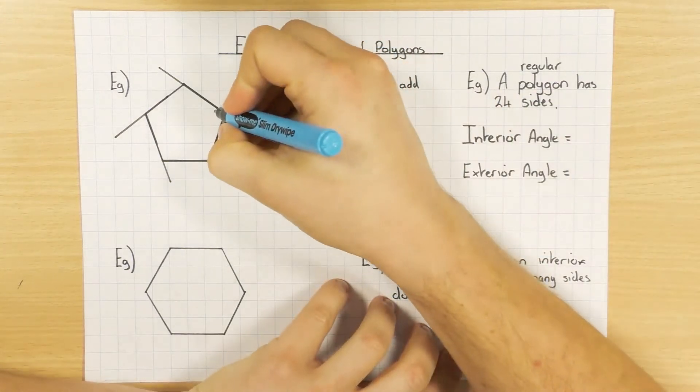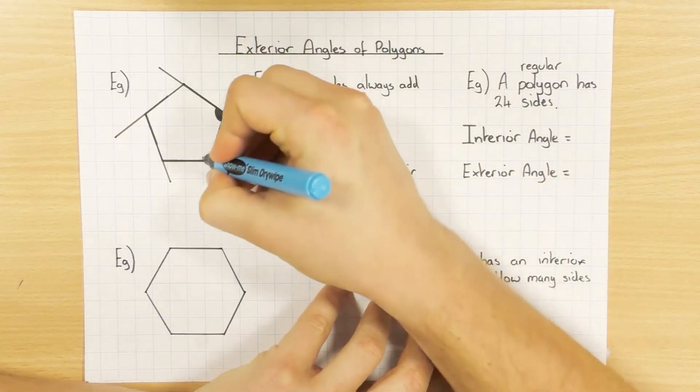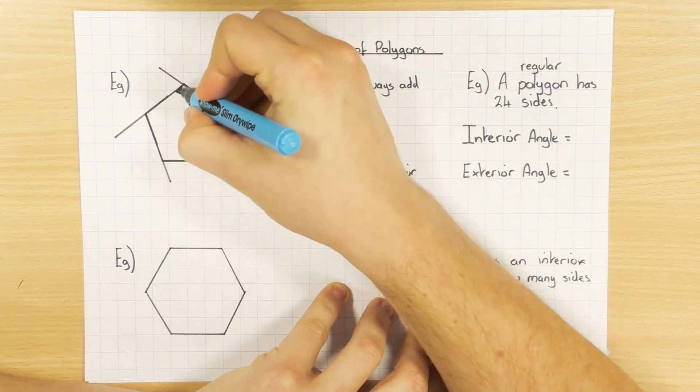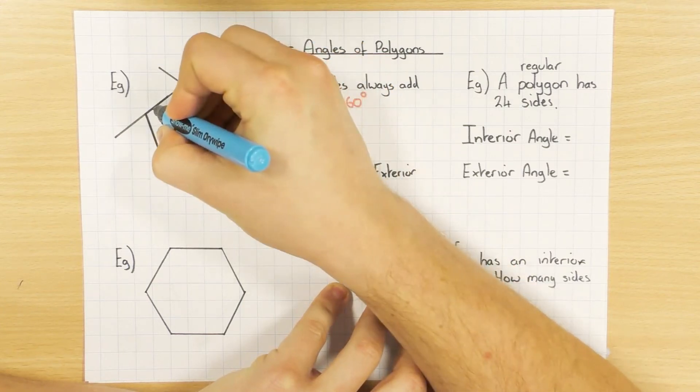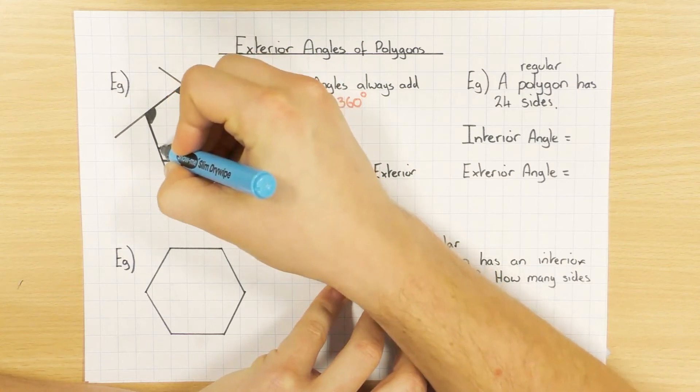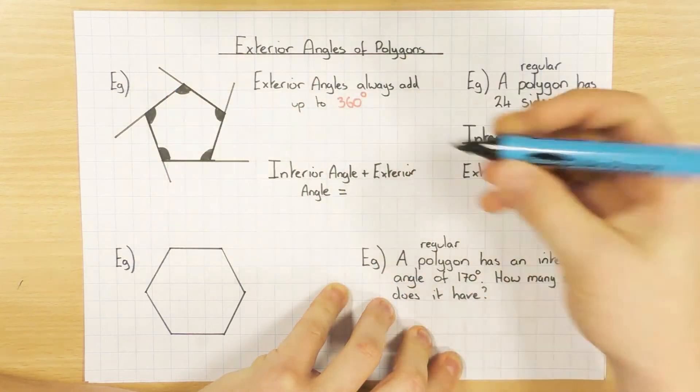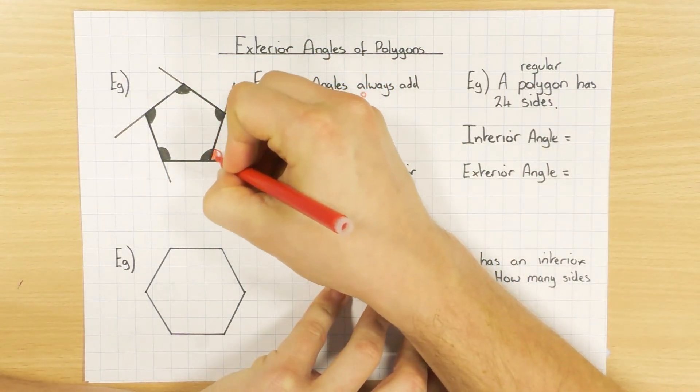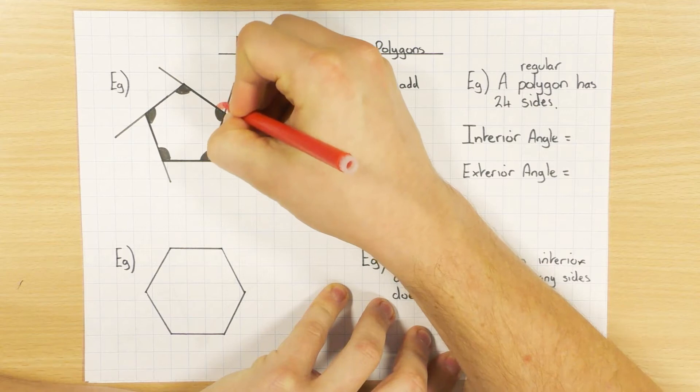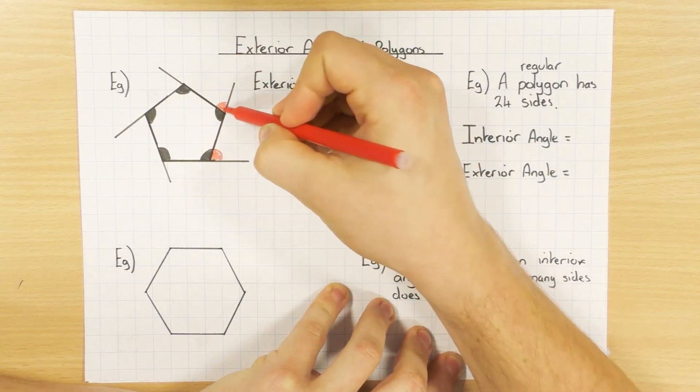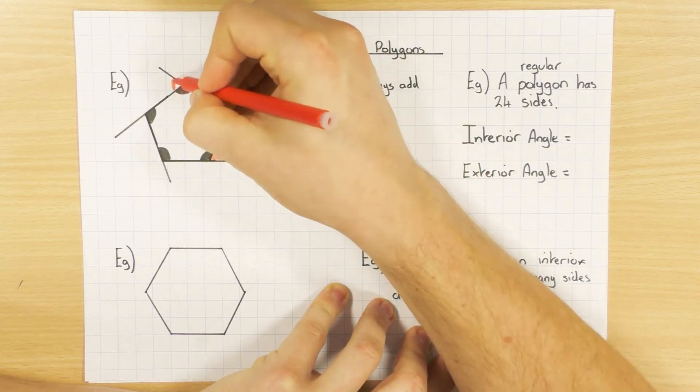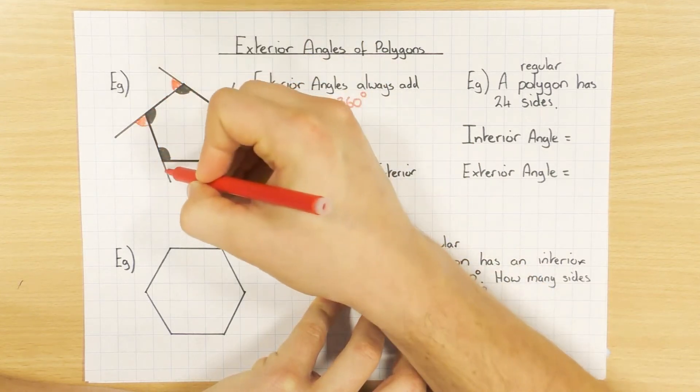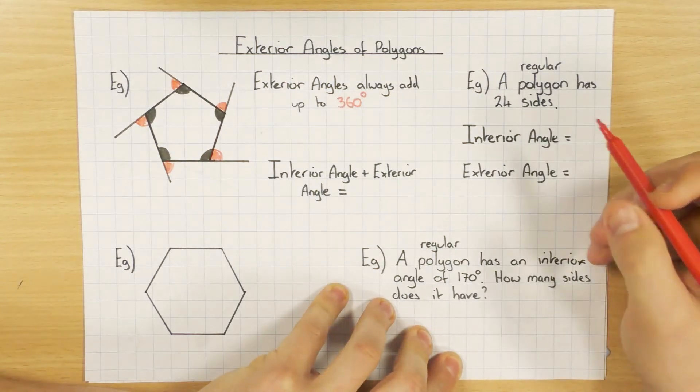I've just extended each side slightly. Now, the interior is obviously going to be the angles inside. So I'll just shade those in to show you. These are all going to be inside, the interior angles. We're going to have a look at the exterior angles, which if we extend the line, are the angle next to the interior.